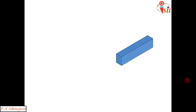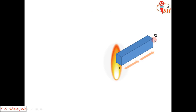Let us consider a metallic rod. If we heat this metallic rod at one end, by observation we can tell that heat will flow from that end to the other end. Let us say these are the faces F1 and F2, so heat will flow from F1 to F2.